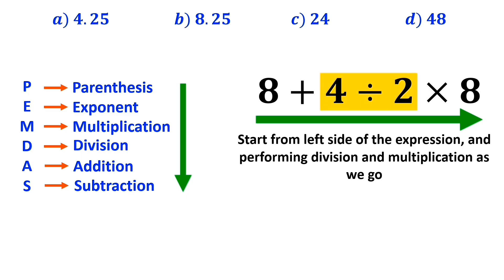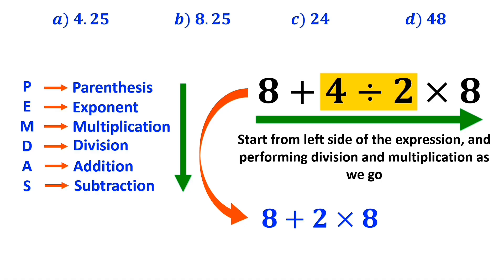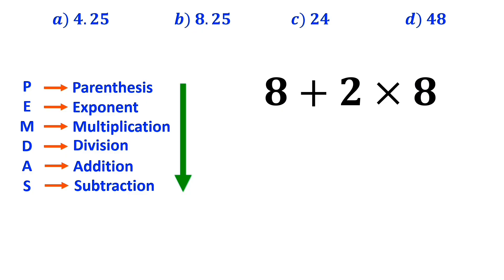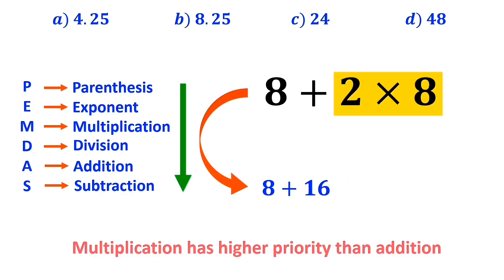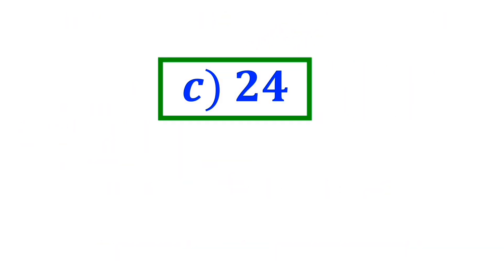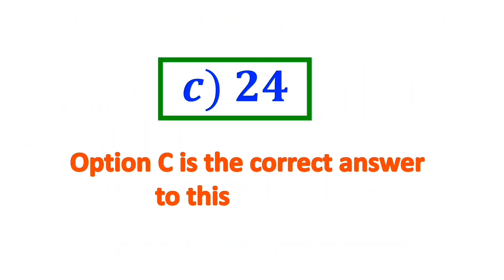We start with the division between 4 and 2, writing 8 plus 2 multiplied by 8. In the next step, we go to the multiplication between 2 and 8, because multiplication has higher priority than addition. This simplifies to 8 plus 16, which ultimately gives us the answer 24. Therefore, option C is the correct answer to this question.